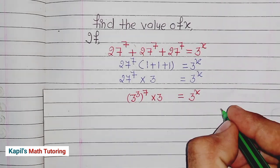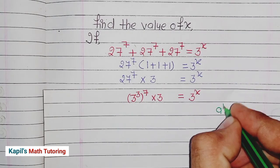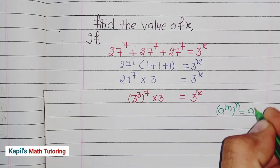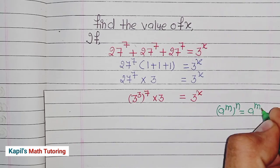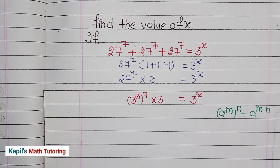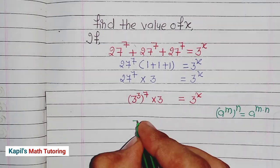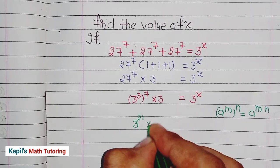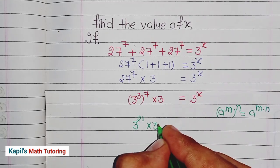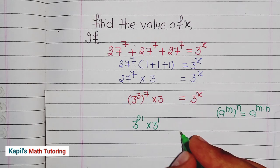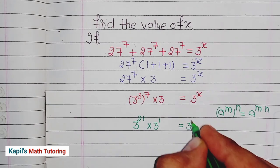The exponential property says that when we have (a to the power m) to the whole power n, we can write it as a to the power m times n — we multiply both powers. So this becomes 3 to the power 21, multiplied by 3, which I write as 3 to the power 1, and this equals 3 to the power x.